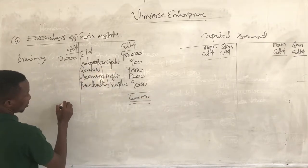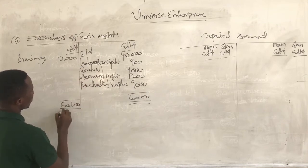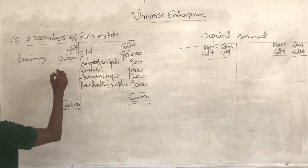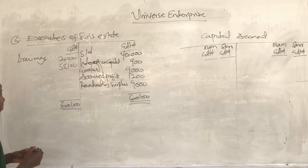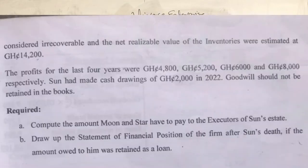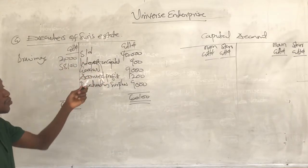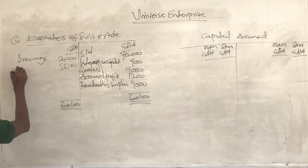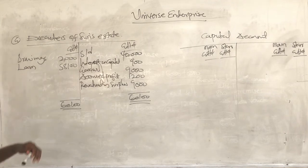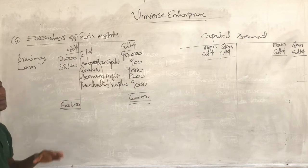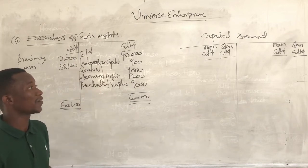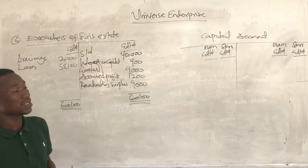To close off this account: the credit side totals $60,100. The drawings debit of $2,000 means the net amount due to the executors of Sun's estate is $58,100. The question says that in requirement B, the amount due to Sun should be retained as a loan in the final statement of financial position — possibly because the cash available will not be enough to pay off the executors of Sun.